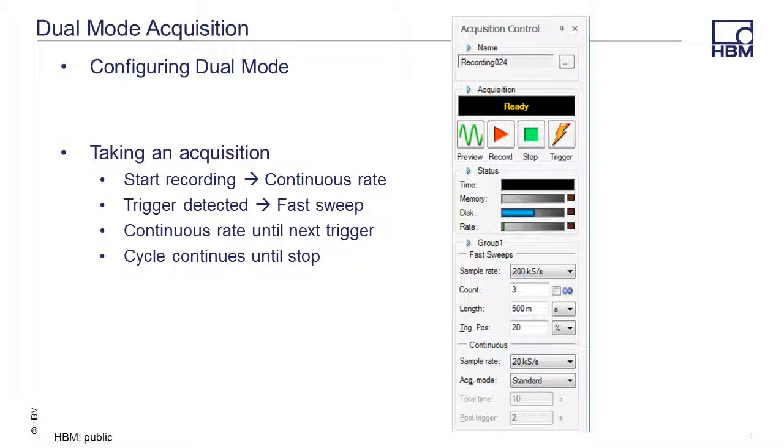The sweep length can be set in either time, denoted by a lowercase s for seconds, or in samples, denoted by a capital S. In this example, the sweep length is 500 milliseconds.